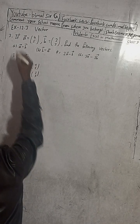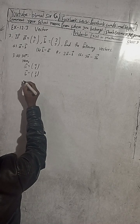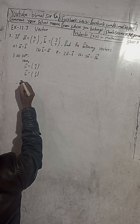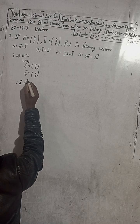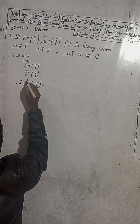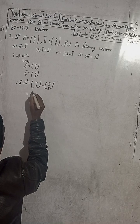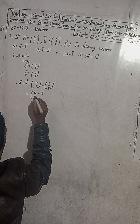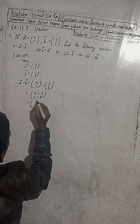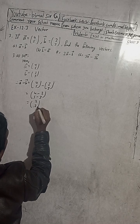So now we can write, therefore, A vector minus B vector is equal to (4,5) minus (2,3). So we can write 4 minus 2, 5 minus 3. So this is equal to, 4 minus 2 is 2 and 5 minus 3 is 2. So (2,2) is the answer.